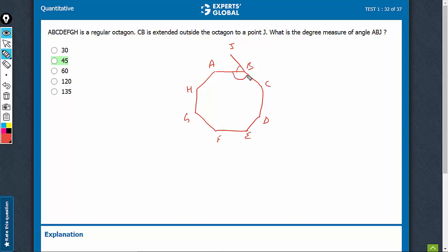So, we figure out the internal angle. The external angle is always 360 upon N. So, which is going to be 360 upon 8, 45 degrees, that's going to be the answer in this case.